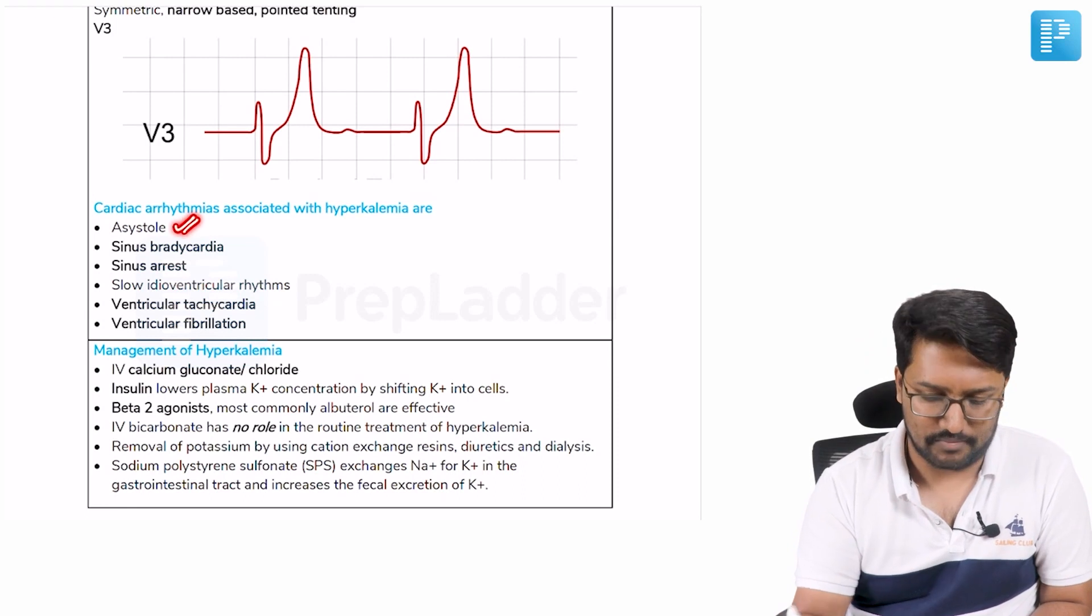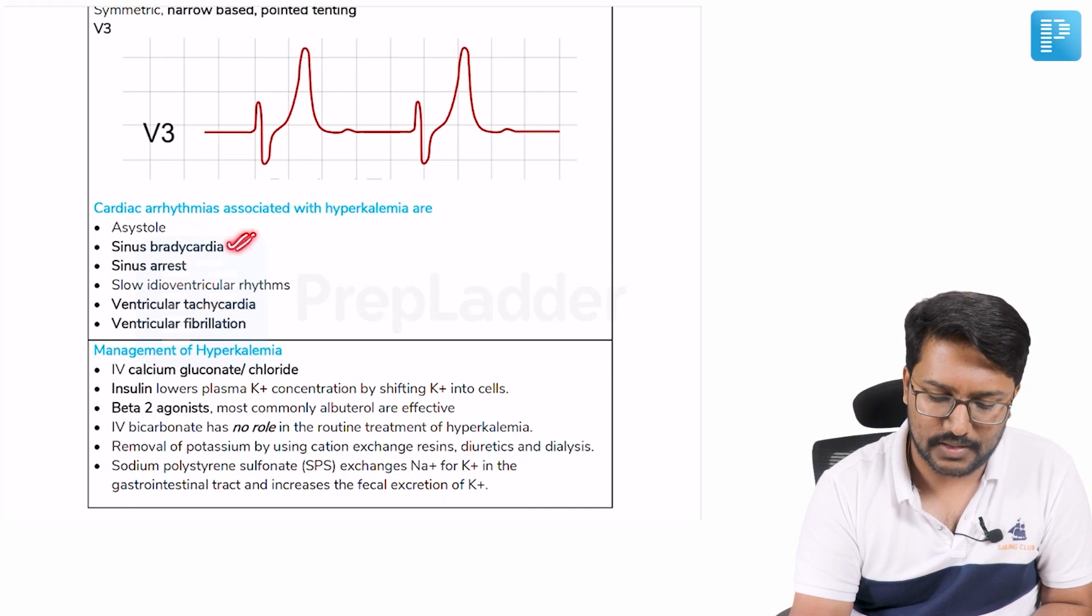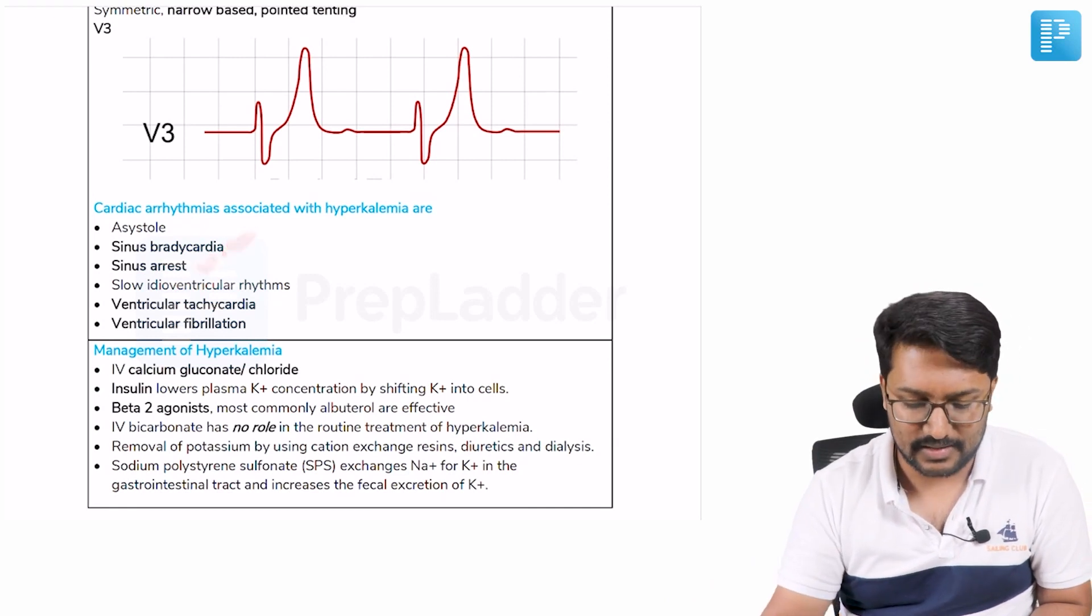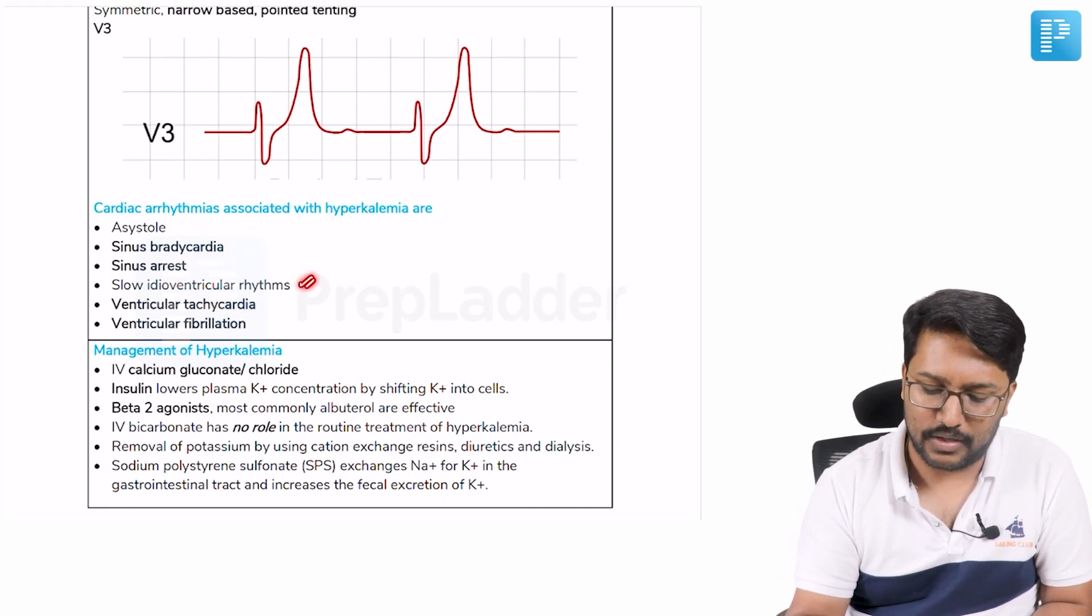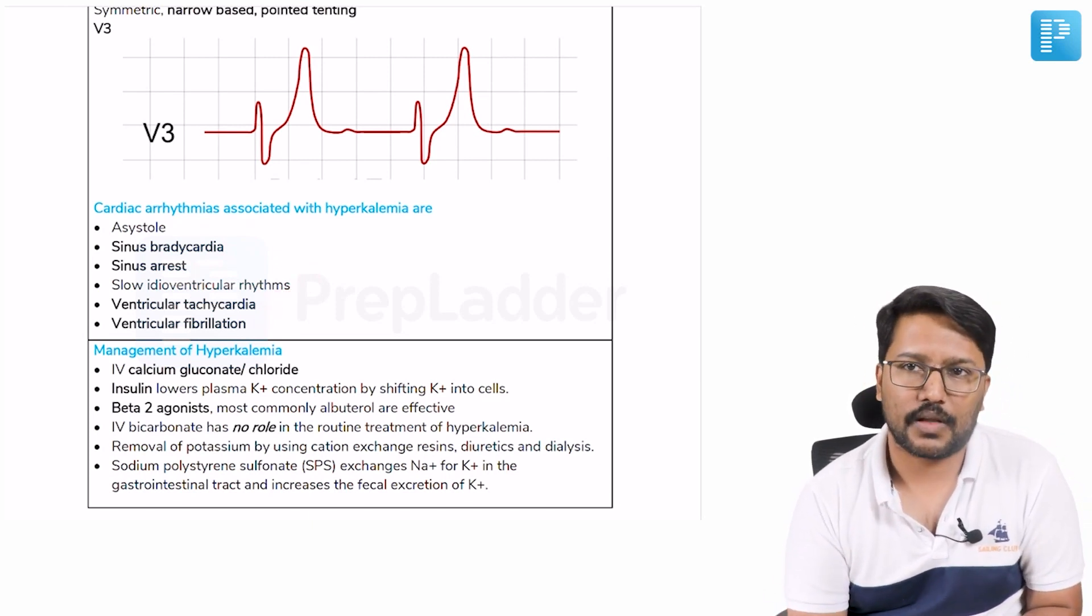In severe hyperkalemia, patients can present with asystole, sinus bradycardia, sinus arrest, slow idioventricular rhythm, ventricular tachycardia, or ventricular fibrillation.